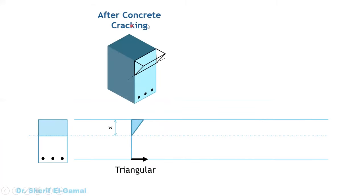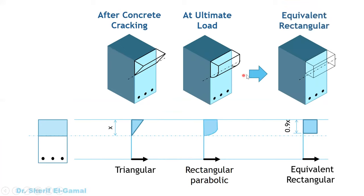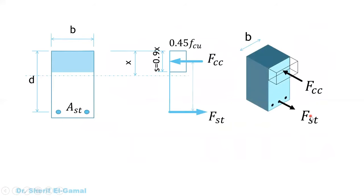To summarize: just after cracking, the stress will be triangular and tensile forces will be carried by the tension steel. At ultimate we have the rectangular parabolic, and to make it easier for engineers to design, this is changed to an equivalent rectangular with height 0.9x and maximum value 0.45 fcu. We have a compression force Fcc, a tension force Fst in the steel reinforcement, and the lever arm is called z.